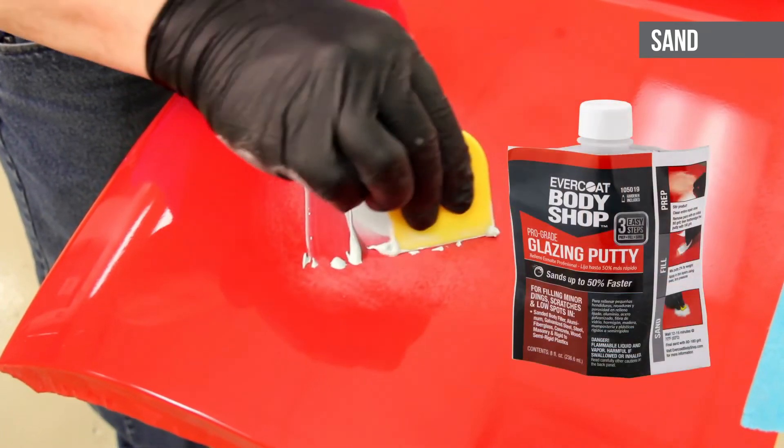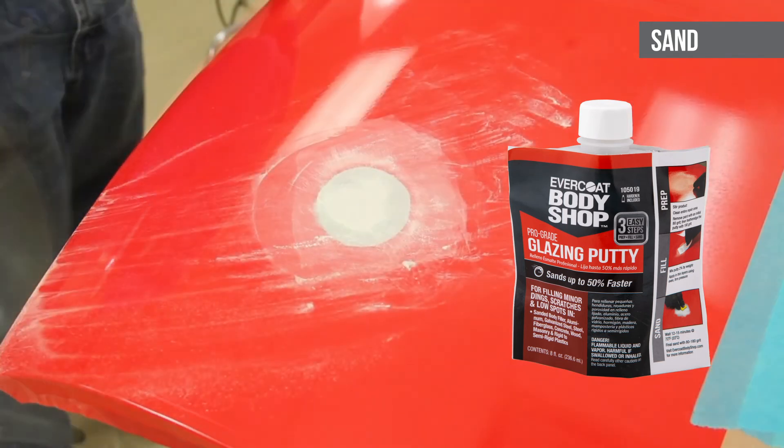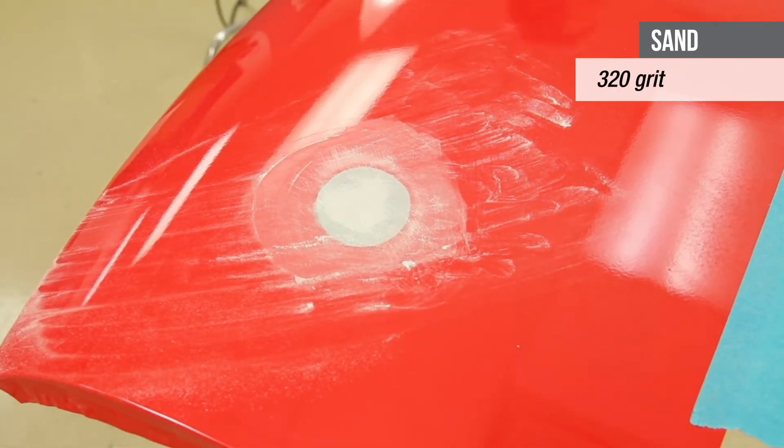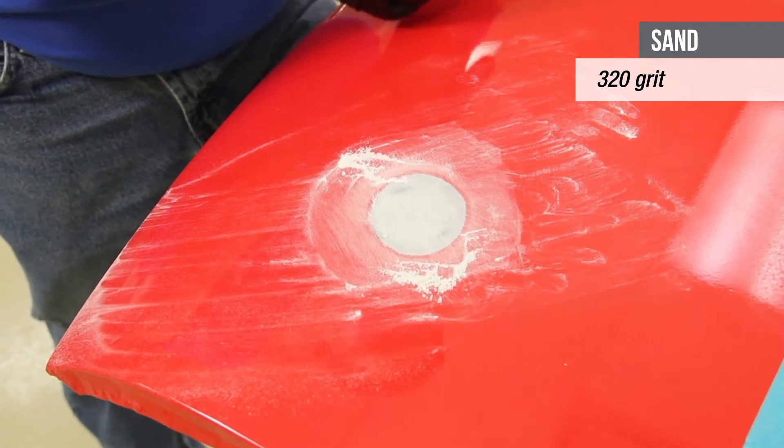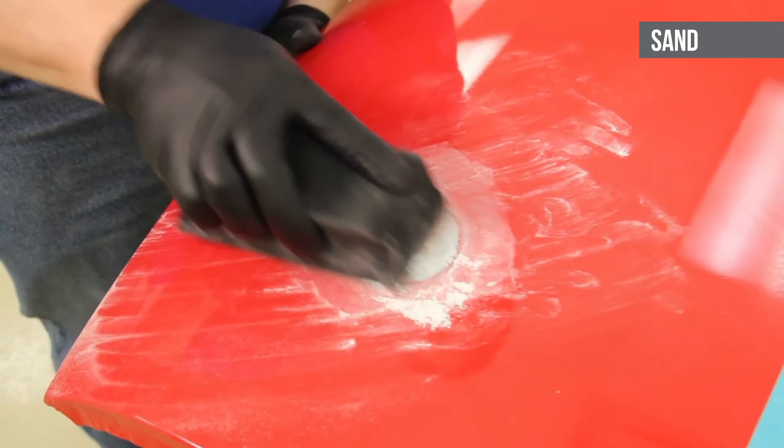If not, sand with 320 grit sandpaper to remove the 180 grit sand scratches and feather edge the repair area before priming. By following these three easy steps, your project is now ready for paint.